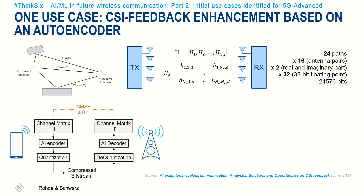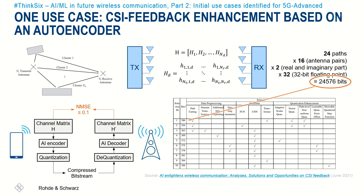For the challenge to solve this problem using machine learning techniques, more than 900 teams registered. The goal was to develop an autoencoder that compresses the data so that the receiver can recover the information with a normalized mean square error of less than or equal to 10%. The winning team developed a machine learning model that compresses the data by a factor of almost 86 — a fantastic result, and as 3GPP is now looking into this topic, this approach may eventually become reality.